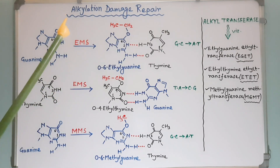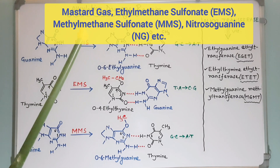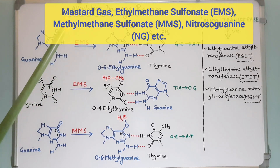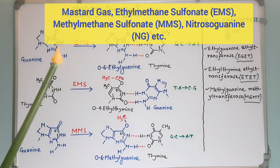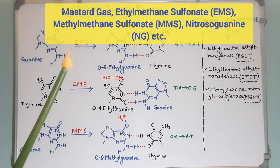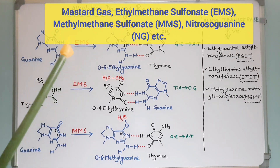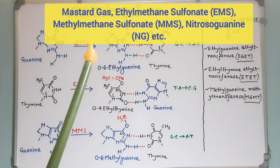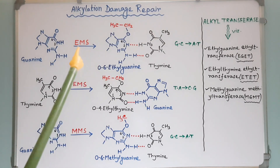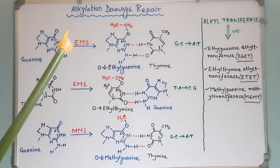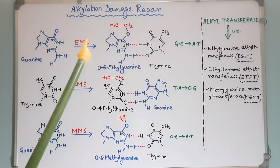Alkylating agents such as mustard gas, ethyl methane sulfonate or EMS, methyl methane sulfonate or MMS, nitrosoguanine or NG, etc., add alkyl groups to many positions on all four bases of DNA. As a result, base pairings among bases are altered.